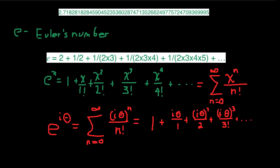I want to talk a little bit more about this way of representing complex numbers in polar form. But before doing that, I want to explain a little bit about this function e to the x. The number e is called Euler's number, and as I've said before, it is an irrational number like pi. Here is the number going out many, many decimal places.